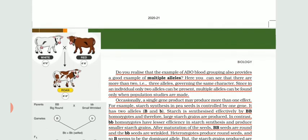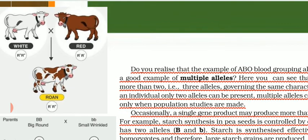One more very common example is seen in cattle: one parent is white in color and the other is red in color. When they are crossed with each other, the F1 generation is neither white nor red but looks similar to both parents. The color has not been blended, so it is not an example of incomplete dominance, but a very good example of co-dominance, where both the traits of the parents appear in the F1 generation.